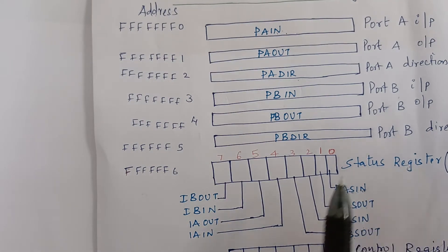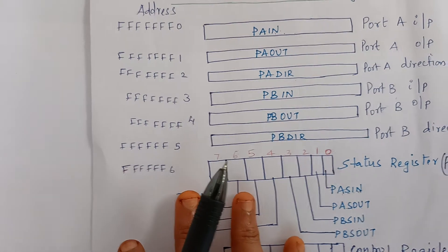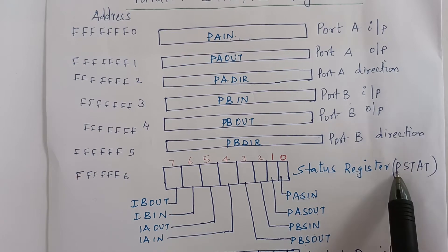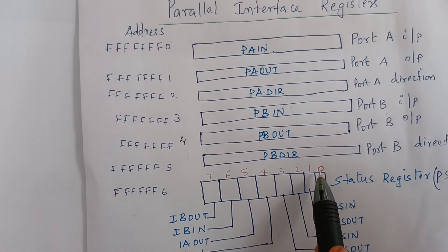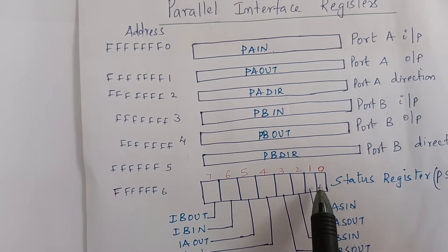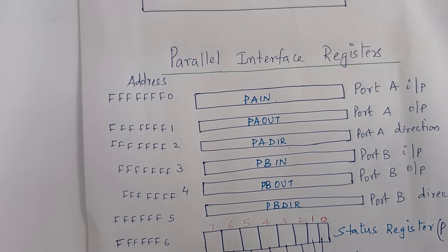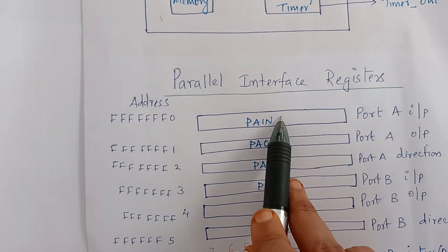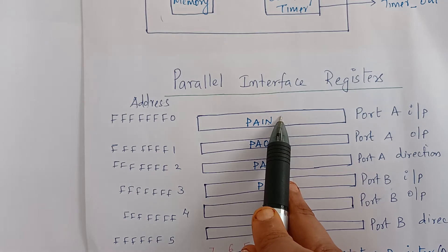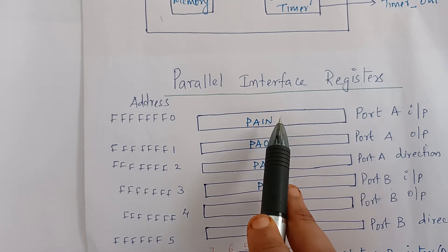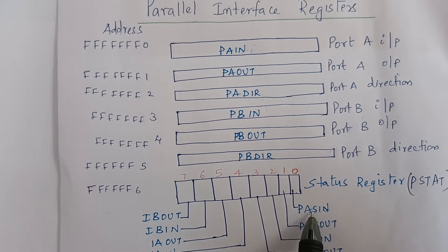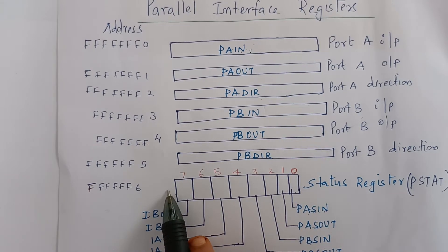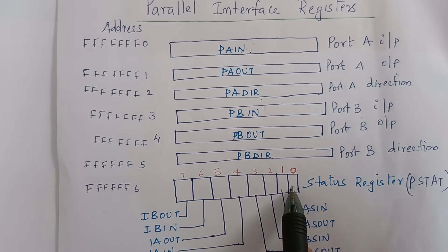Now let us go to the status registers. The status register goes to Port A and Port B. If there is a new data on the pins of this port, Port A status in (PASIN) is set to 1 at bit position 7.